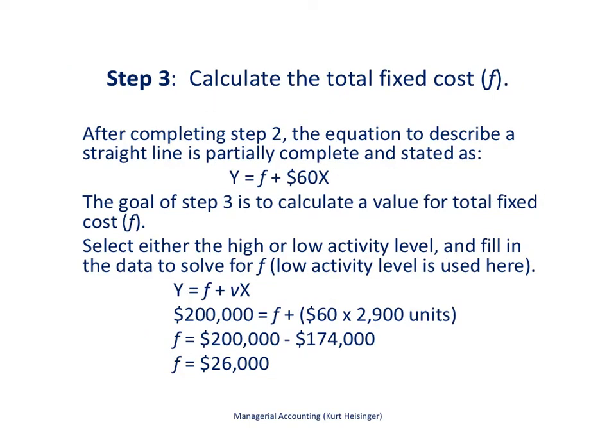Step 3 requires us to calculate the total fixed cost. And what we have now, what we know, is the variable cost per unit, this $60 right here. So we are going to plug that into the equation Y equals f plus vX, 60 is the V part of this, and solve for total fixed cost. And really the only way to do that is to have a value for Y and a value for X.